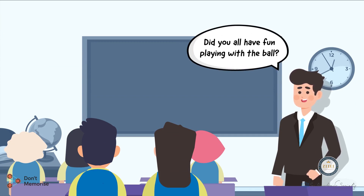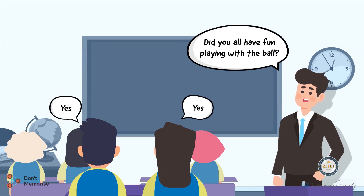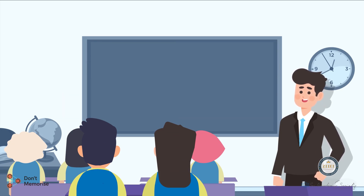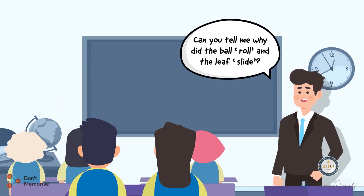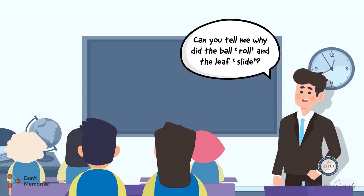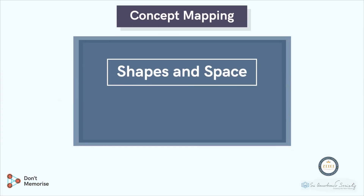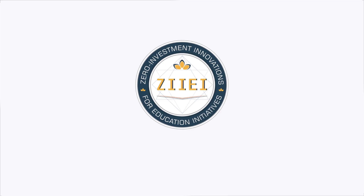Let's take the students back into the classroom and instruct them to settle down. Inquire if they had fun playing with the ball. Further, ask them to guess why the ball rolled down the slide and why the leaf slid down. Record their responses. Conclude this activity by beginning the concept mapping, writing the words 'sliding' and 'rolling' on the board. More of this will be continued in our next session.